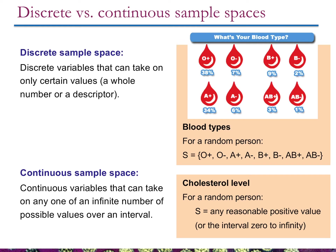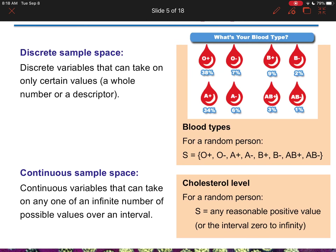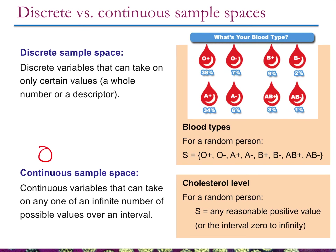Continuous is often also referred to as quantitative — a variable that can take on an infinite number of values. Discrete, as we talked about before, is often also called categorical.